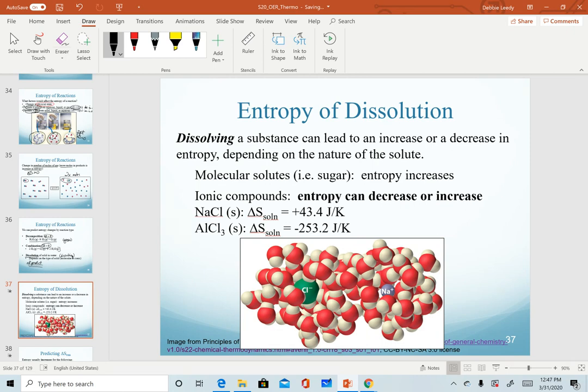When we dissolve a solid in water, if it's a molecular solute like sugar, any molecule made up of non-metal atoms, the entropy will always increase for those as we would predict. However, for ionic compounds, the change in entropy can either increase or decrease. So here we see that sodium chloride, when we dissolve that in water, we get a positive value and that's intuitively what we would predict. However, notice that for aluminum chloride we actually get a negative value here and this is often very counterintuitive.